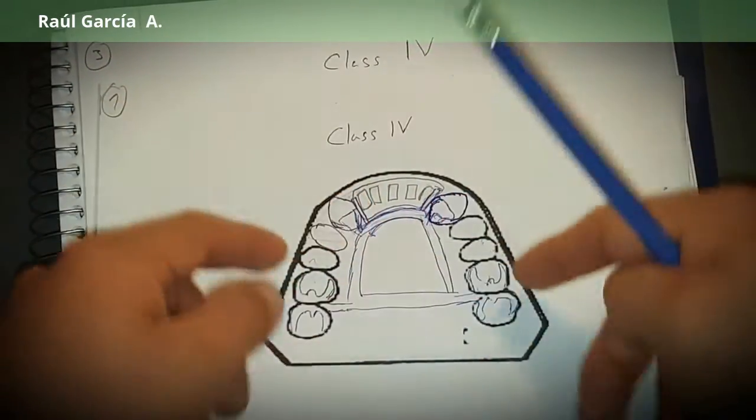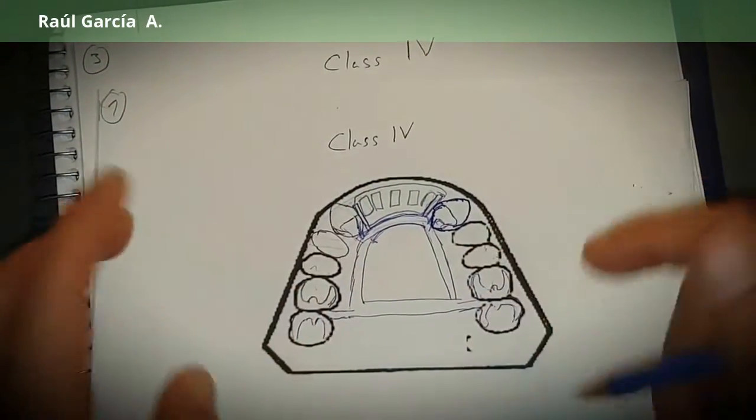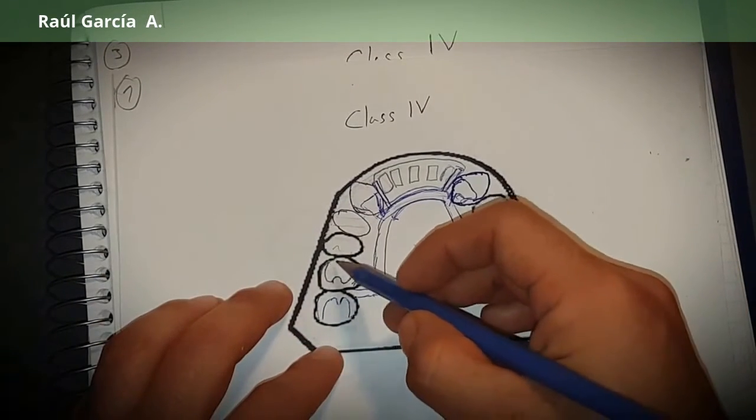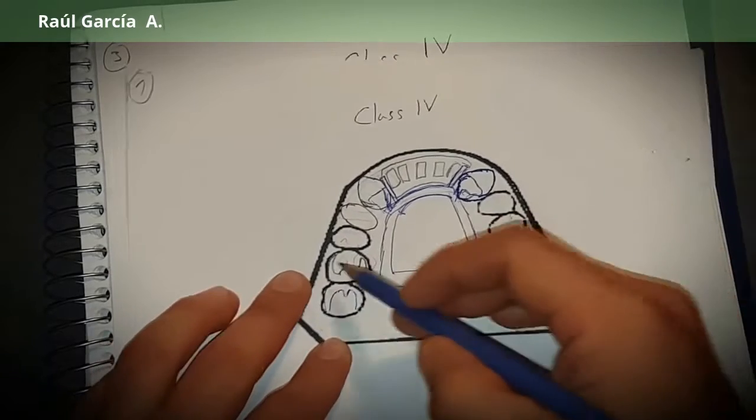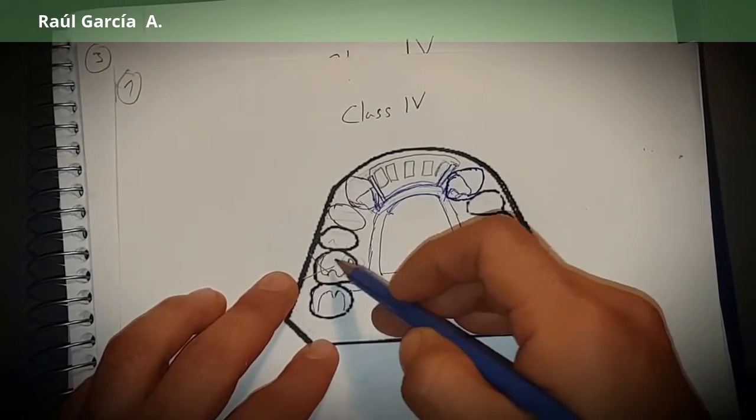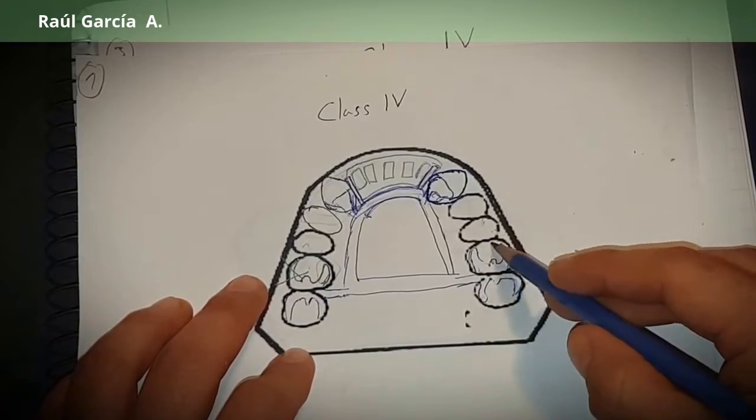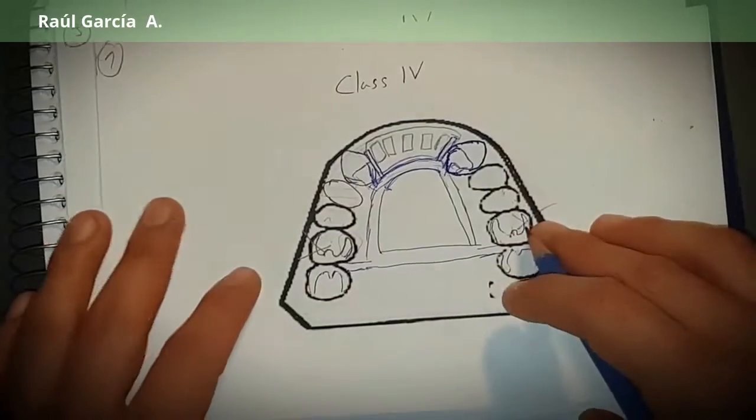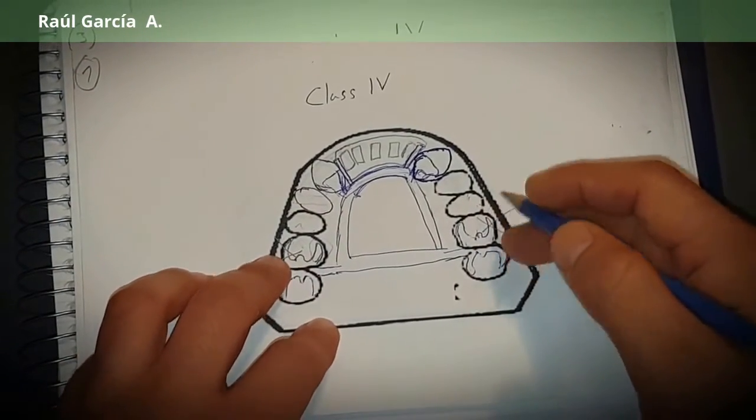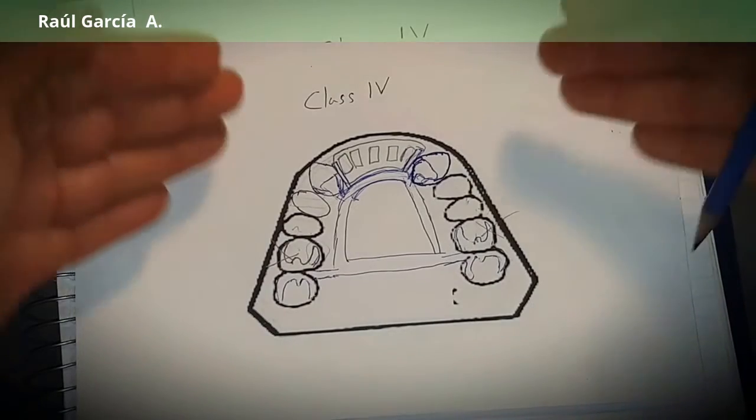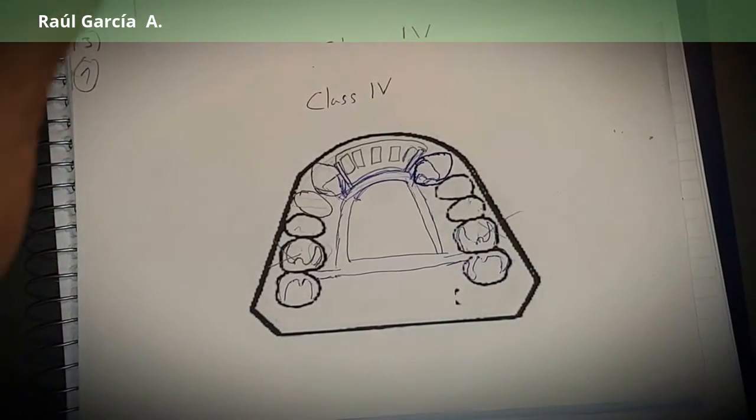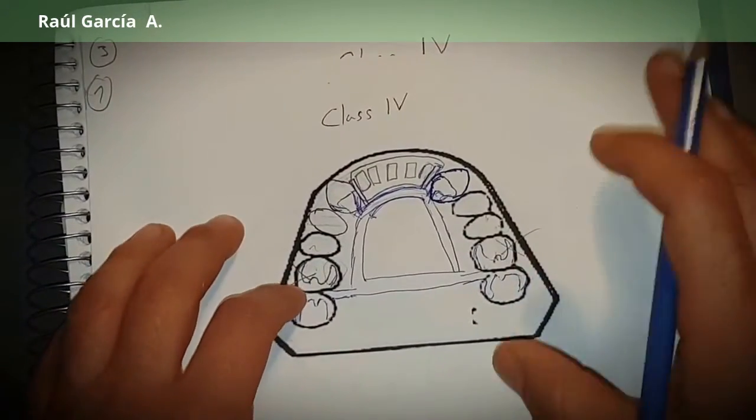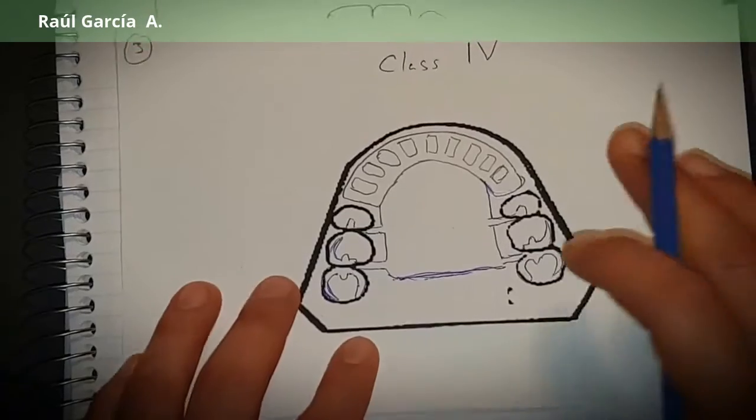You will find also in the books saying you can just use the reciprocating arms and just not draw the retentive arms here. Or you can draw them and just put them on top of the survey line, so it means it doesn't go into an undercut. They're just there to help stabilize the RPD.